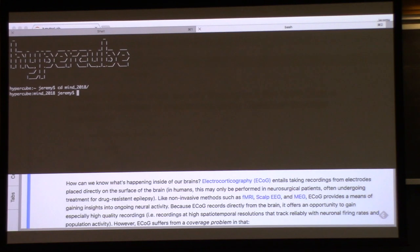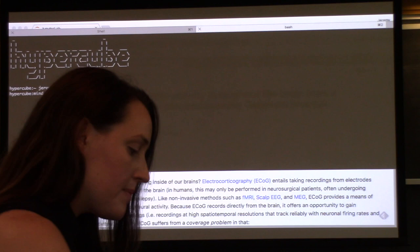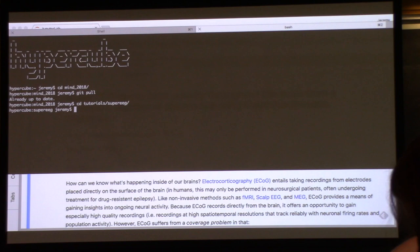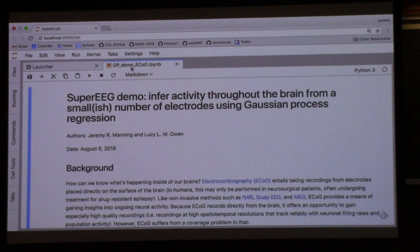So I wanted to tell you about Gaussian process regression. If you want to follow along in the tutorial, go to the mine 2018 repository and git pull, then go to the tutorials super EEG directory and run the GP demo ECOG notebook.